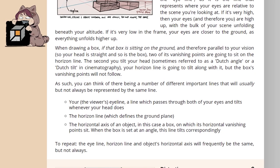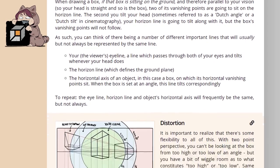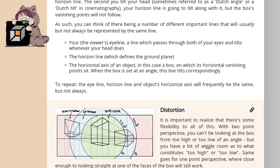As such, you can think of there being a number of different important lines that will usually, but not always, be represented by the same lines. So then there's your, the viewer's eye line, a line which passes through both of your eyes and tilts whenever your head does. The horizon line, which defines the ground plane. The horizontal axis of an object, in this case, a box on which its horizontal vanishing points sit. When the box is set at an angle, this line tilts correspondingly. So, to repeat, the eye line, horizon line, and the object's horizontal axis will frequently be the same, but not always.